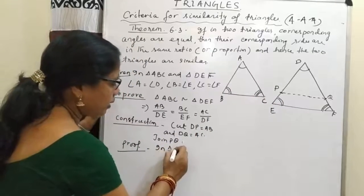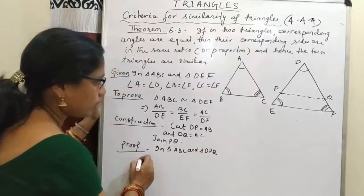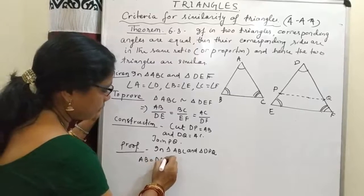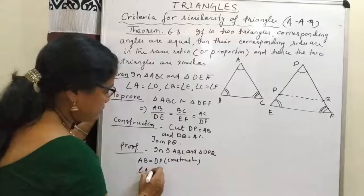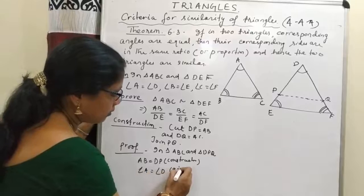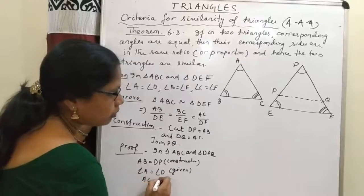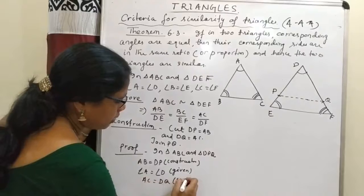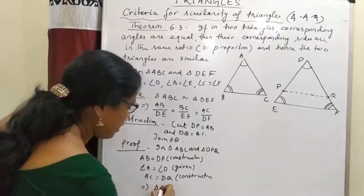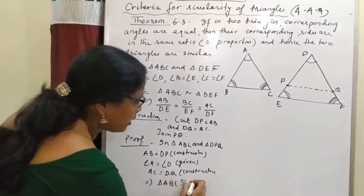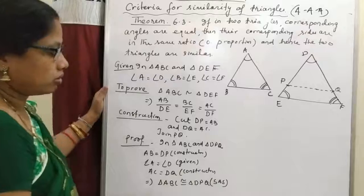We compare triangles ABC and DPQ. In triangle ABC and triangle DPQ: AB is equal to DP by our construction, and angle A is equal to angle D, which is given. Also AC is equal to DQ by construction. So this implies triangle ABC is congruent to triangle DPQ by the SAS congruence rule.